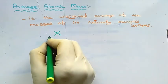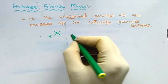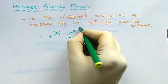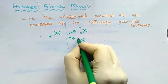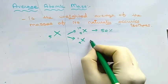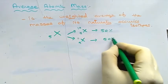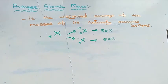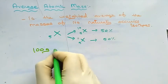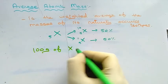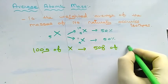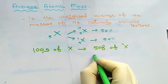Let's see with an example. If an element has the atomic number of five and it has two isotopes in nature, each isotope is abundant 50% in nature. In other words, to make it simple, we can say that in 100 grams of element X, 50 grams of X10 and 50 grams of X11 will be present.